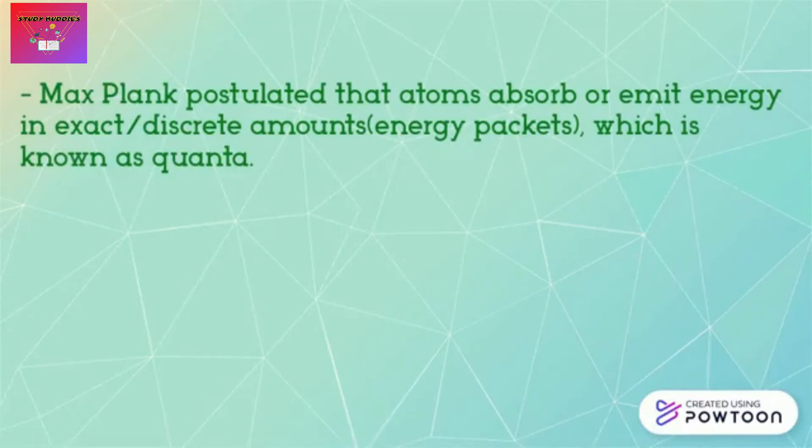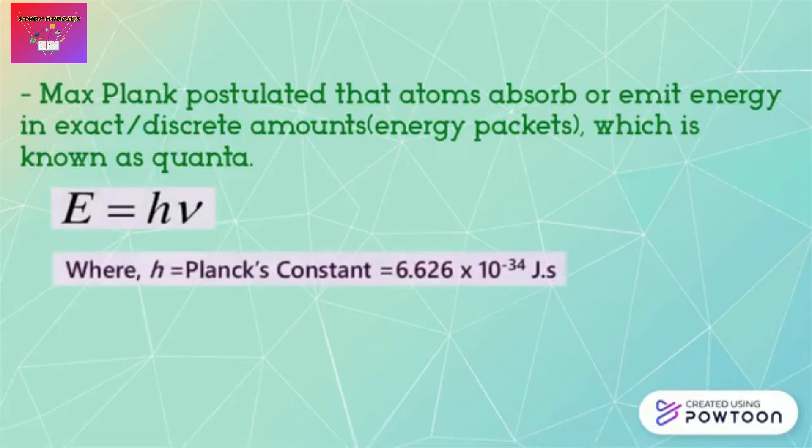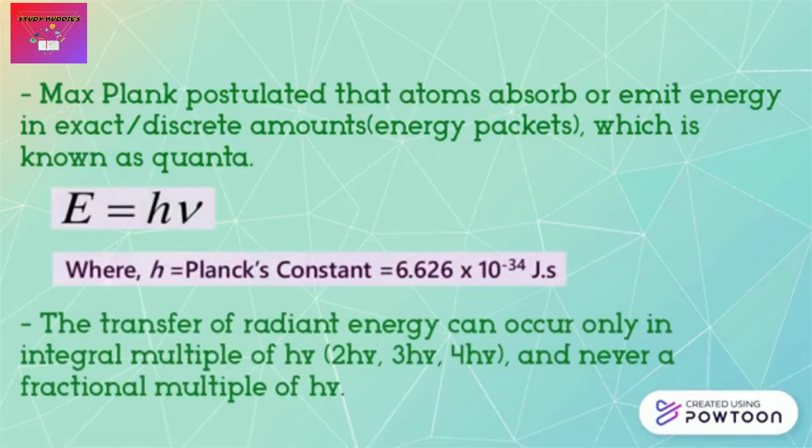Max Planck postulated that atoms absorb or emit energy in exact or discrete amounts which is known as quanta. The equation for this is energy equals H multiply with frequency, where H is Planck's constant that has a value of 6.626 times 10 to the power of negative 34 joule second. The transfer of radiant energy can occur only in integral multiples of HV, for example 2HV, 3HV, or 4HV, and never a fractional multiple of HV.